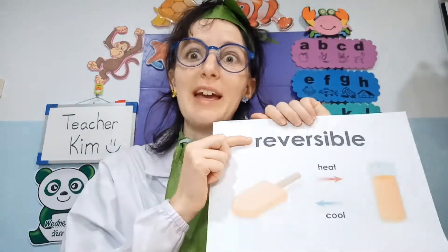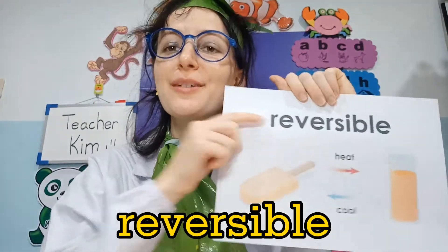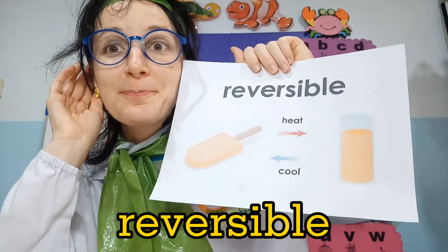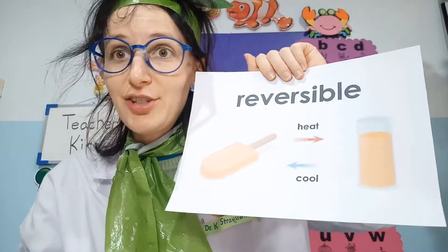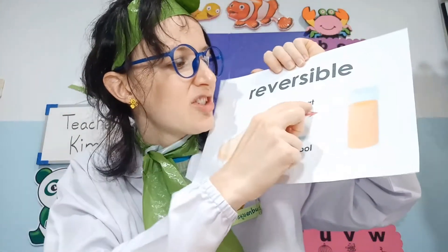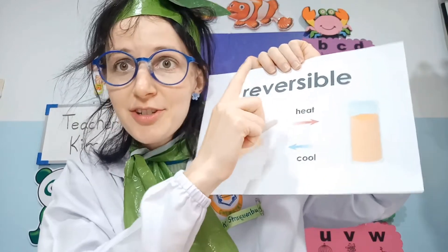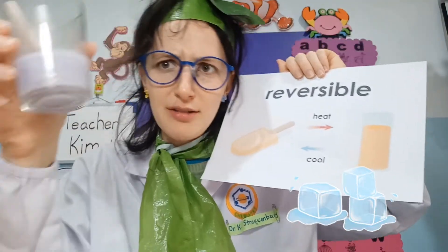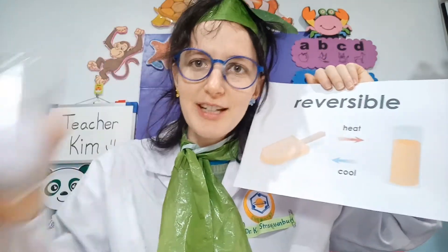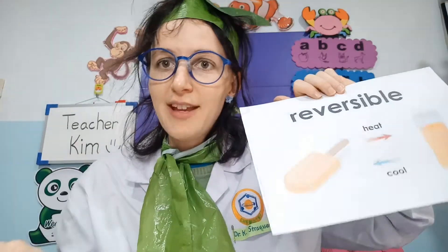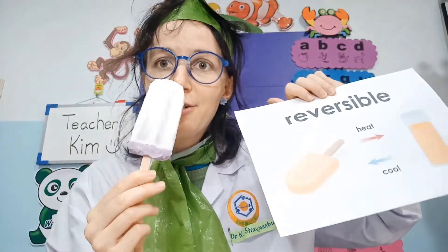But some changes are reversible. Just like my popsicle — it can change. If there is heat, the temperature goes up and it will melt, then it will become a liquid. But I can freeze it again, bring the temperature down, and it is now a popsicle again.